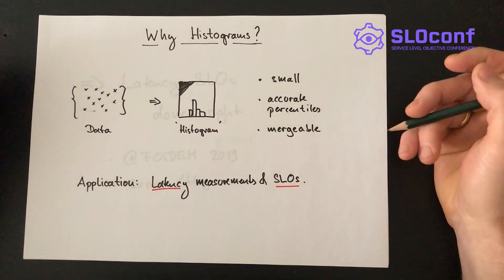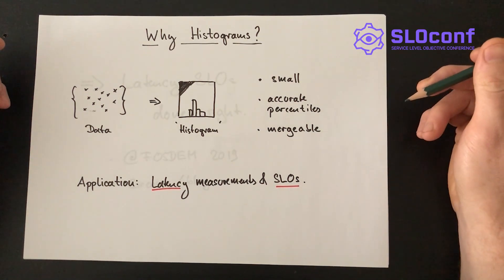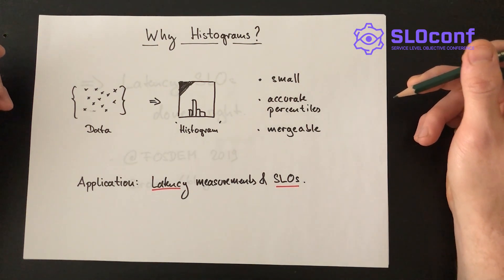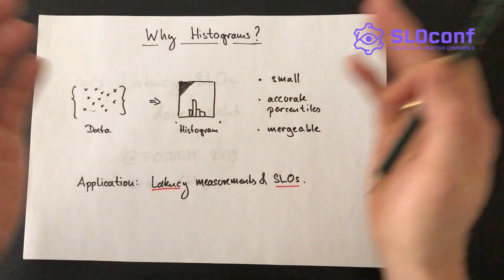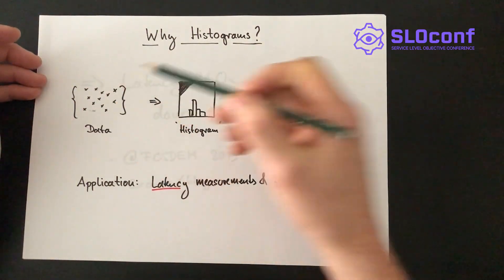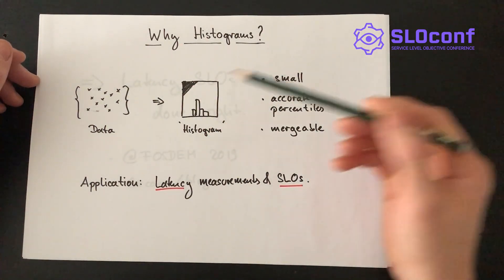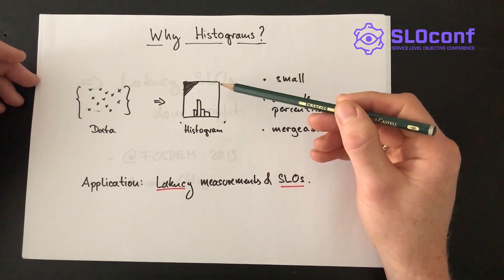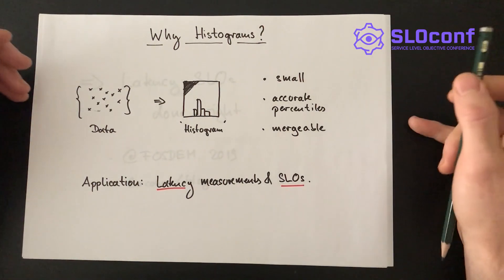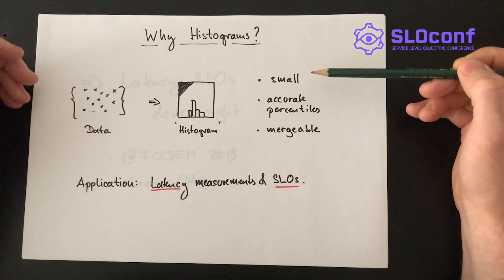Let's start with a little introduction to histograms before we dive in further. Why are we talking about this topic at an SLO conference? Histograms are a data structure that allows you to summarize data in the form of statistical distributions. Here I've painted a bunch of float values in the form of little Xs and you can insert them into a histogram data structure — just any data structure that you can insert this data into.